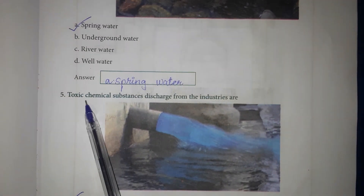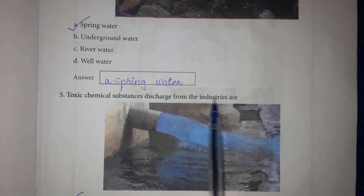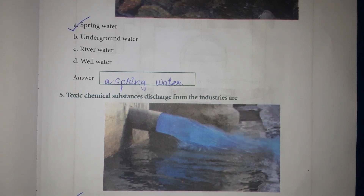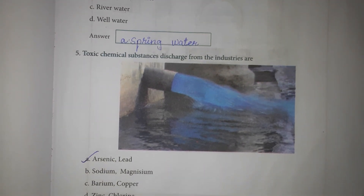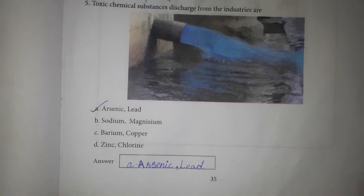Fifth question: Toxic chemical substances discharged from industries are. Answer: Option A — Arsenic, lead.